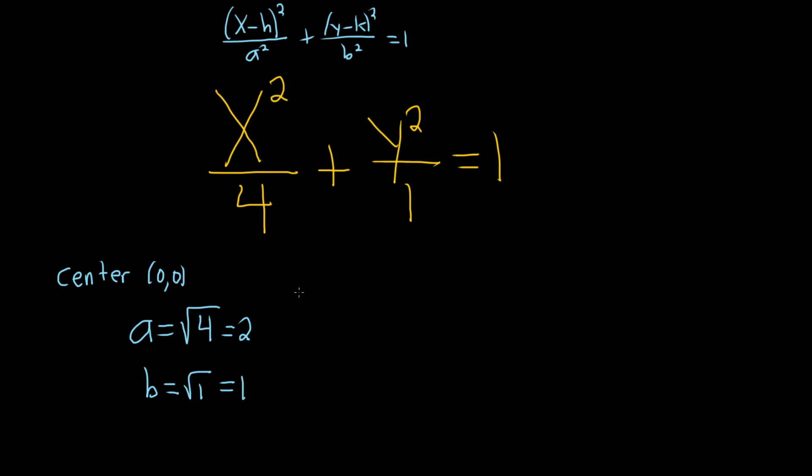Because the bigger number is under the x, the major axis is said to be horizontal. If it was the case that the bigger number was under the y, then the major axis is vertical.